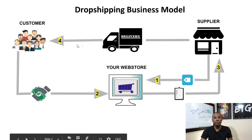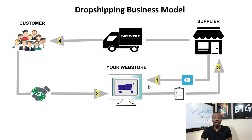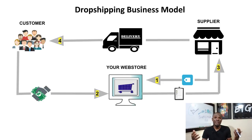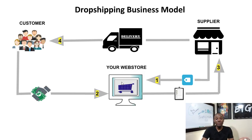This right here is the Shopify dropshipping business model. I have some numbers here from 1 to 4 and I'm going to be explaining how this works. Once you understand this diagram you will understand most of what you need to know to start your Shopify dropshipping business. First and foremost, you need to have a website. Your website will be created on Shopify — you can get started for free with a 14-day free trial, and you can actually make a lot of sales during that free trial period.